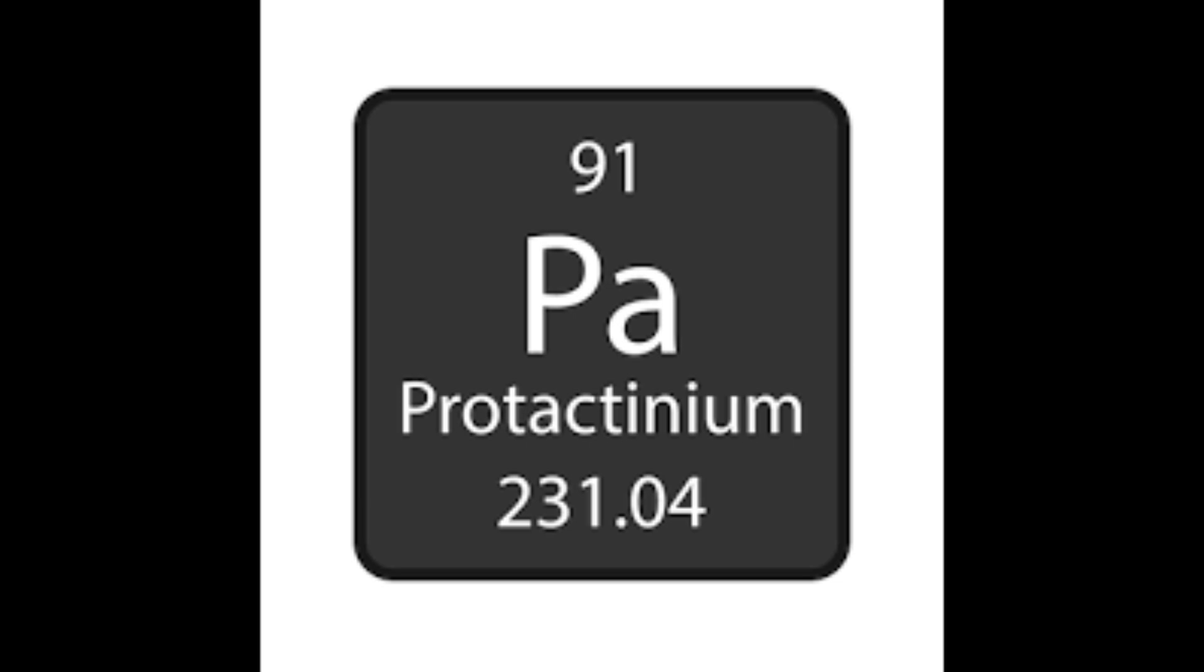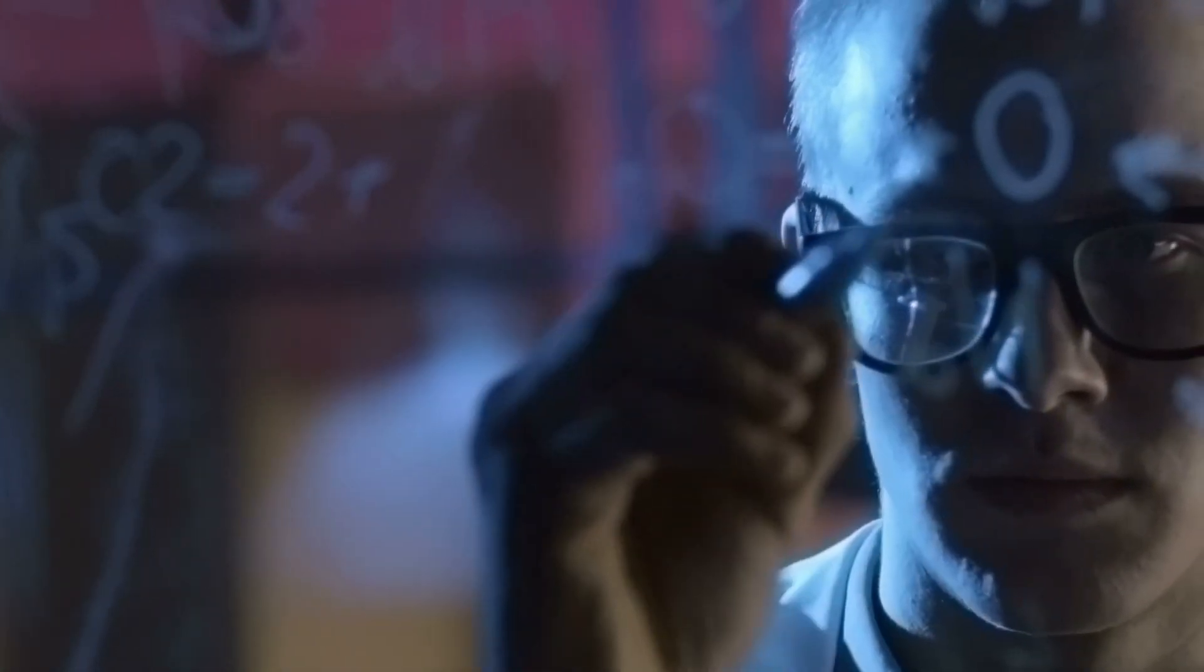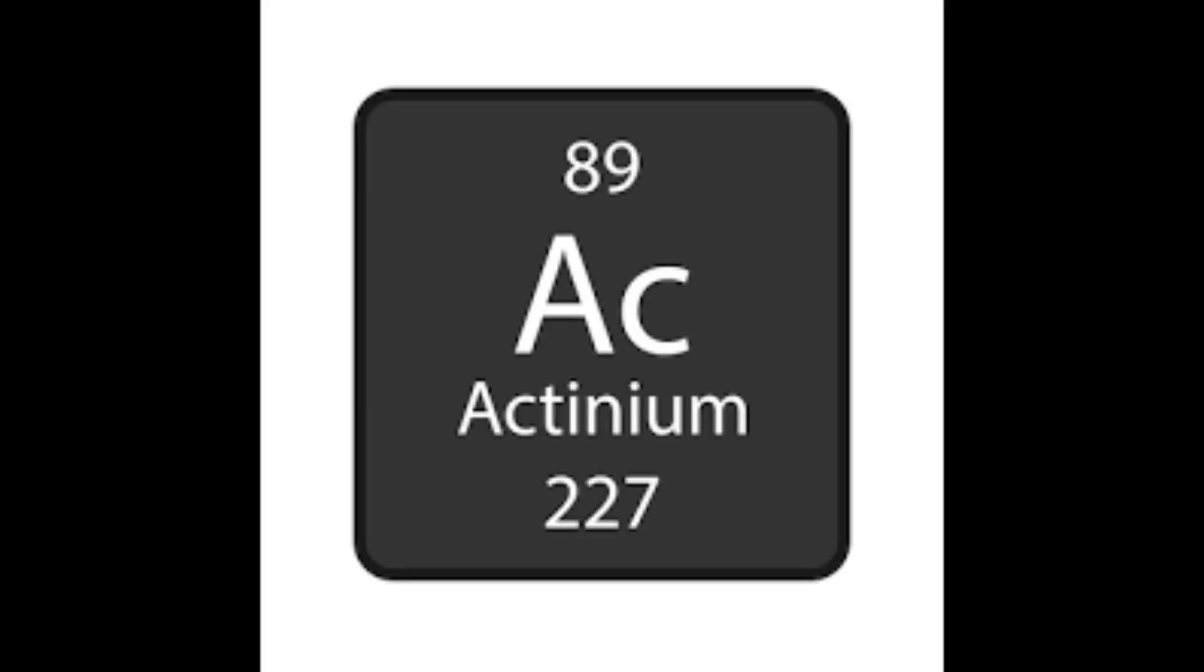Protactinium 231 has a half-life of about 32,760 years, decaying into actinium 227 through alpha decay.